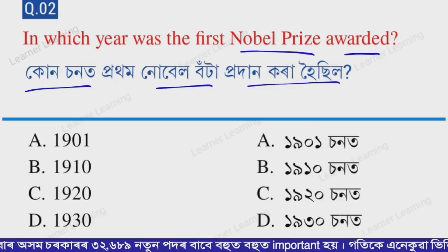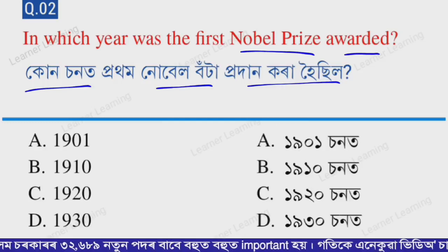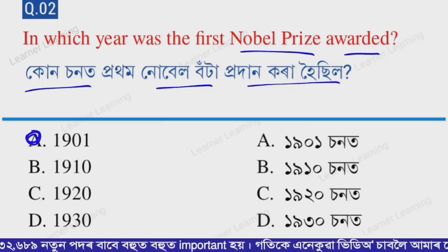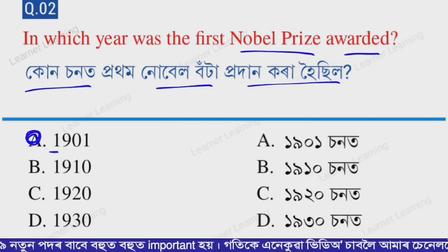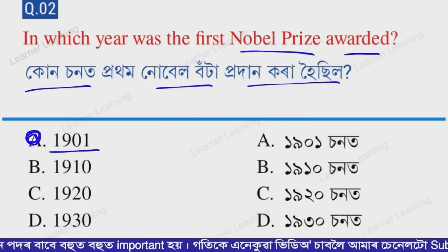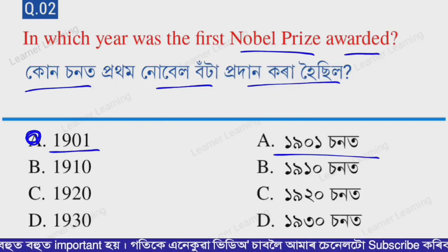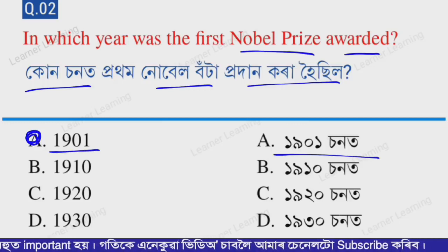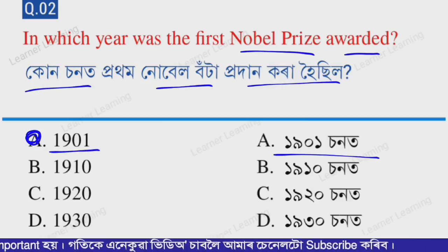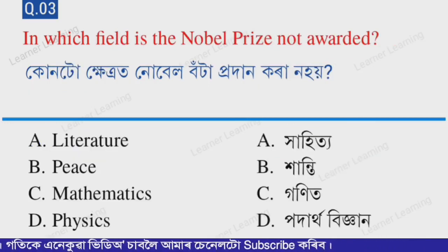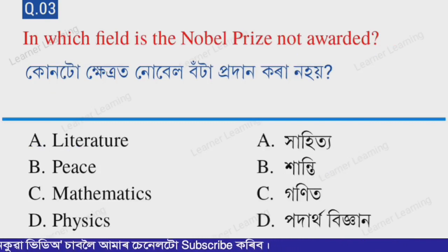Next question: In which year was the first Nobel Prize awarded? The correct option is option A — 1901. The first Nobel Prize was awarded in 1901.